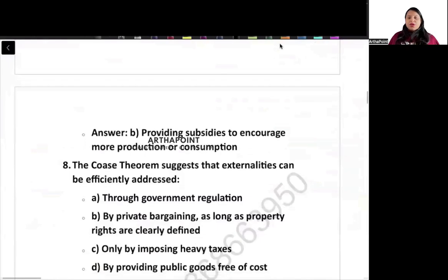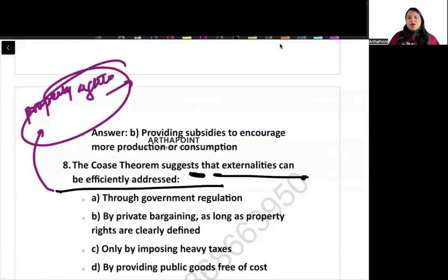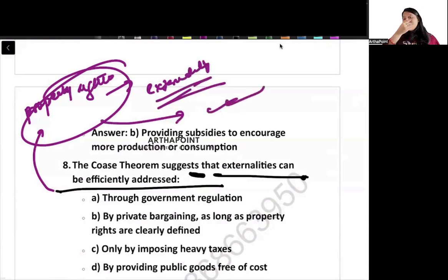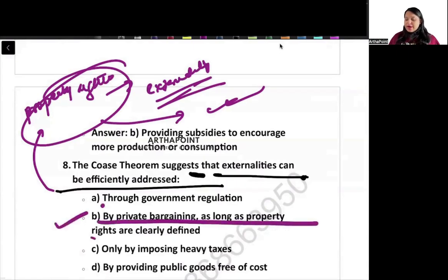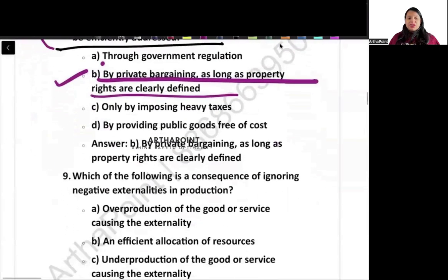The Coase theorem suggests that externalities can be efficiently addressed. What does the Coase theorem say? We can go ahead and give property rights, and through giving these property rights we can resolve the externality problem. But these property rights have to be clearly defined — it has to be stated exactly who owns that thing. So the correct answer is B: by private bargaining, as long as property rights are well defined.